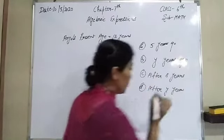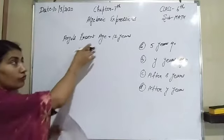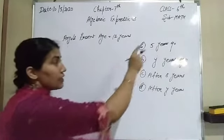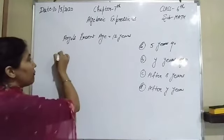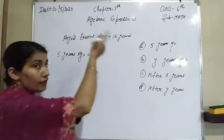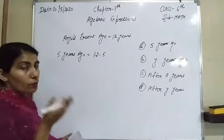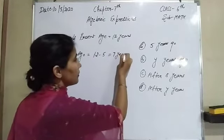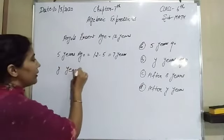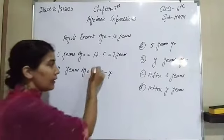We have to write down the age of Anju in the form of algebraic expressions. First one is five years ago — five years ago, present age is 12, so 12 minus 5 equals 7 years. The second is y years ago — present is 12, y years ago means 12 minus y years.